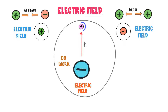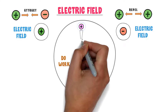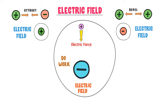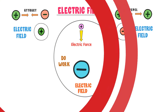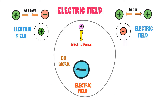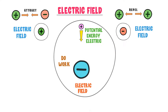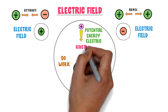Let the height of this point charge be h. At this position, this point charge experiences the downward force of the negative charge, just as an object experiences the downward force of Earth's gravity. So we say that this point charge possesses potential energy. More precisely, this point charge is present in the electric field, so it possesses electric potential energy. If I release this point charge, it will accelerate towards the negative charge and its electric potential energy is converted to kinetic energy.